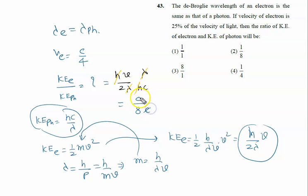And c is canceled. So finally it is 1 is to 8. The right answer of this problem is option 2, that is 1 is to 8.